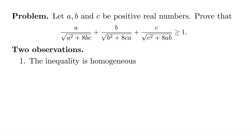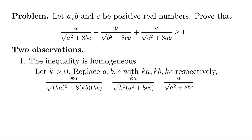First, the inequality is homogeneous. Look at the fractions on the left-hand side. Their numerators a, b, and c are linear terms. Their denominators are roots of homogeneous quadratic polynomials, also linear. So if a, b, and c are rescaled by a constant k, the inequality will remain the same. Without loss of generality, we assume a plus b plus c equals 3 for the rest of the video. You can use other scales; the proof will be similar.